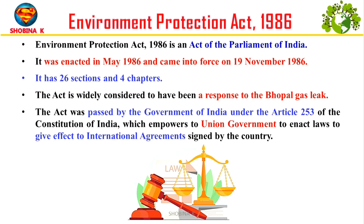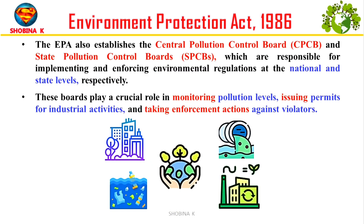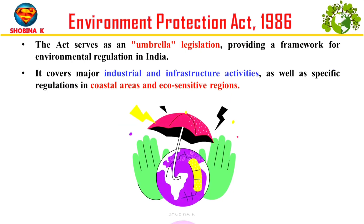This act was passed by the Indian government under Article 253 of the Constitution, which allows the central government to make laws to fulfill international agreements signed by India. EPA creates two important bodies: the Central Pollution Control Board (CPCB) and State Pollution Control Boards (SPCBs). CPCB handles environmental regulation nationally while SPCBs manage them at the state level. Both boards monitor pollution, issue permits for industries, and enforce rules by penalizing offenders. This act is like a big umbrella for environmental rules in India.